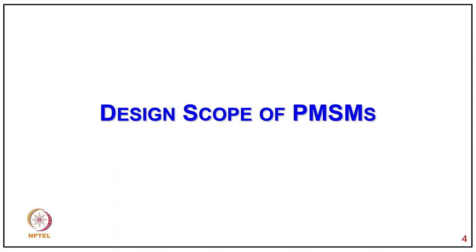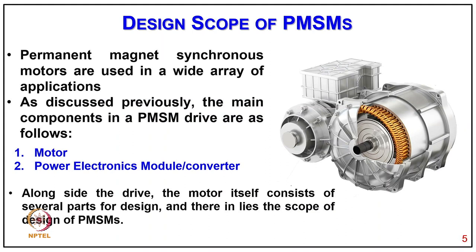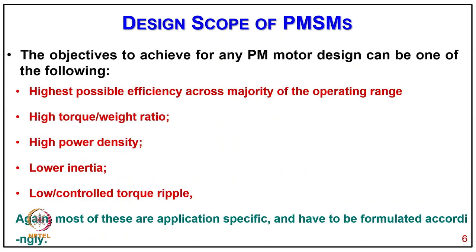Coming to design of permanent magnet synchronous motor, these motors are used in a wide range of applications as discussed previously. The main components include the motor drive model, converter or controller. The objectives for any PM motor design can include highest possible efficiency across the majority of the operating range, highest torque to weight ratio, high power density, low inertia, and low controlled torque ripple.